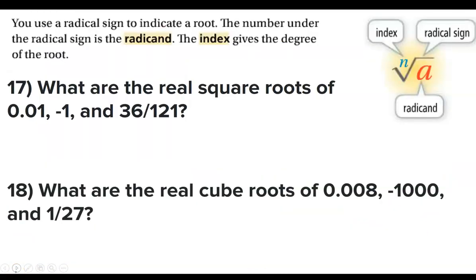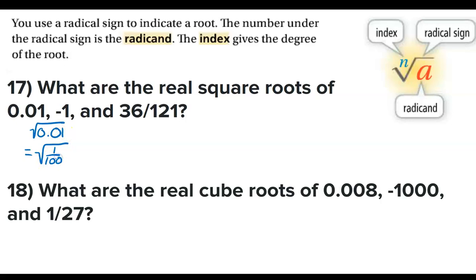We have three examples for real square roots and real cube roots. What are the real square roots of 0.01, -1, and 36/121? For the square root of 0.01, we change the decimal to a fraction: that's the square root of 1/100. To square root a fraction, you square root the top and square root the bottom. The square root of 1 is 1 and the square root of 100 is 10.